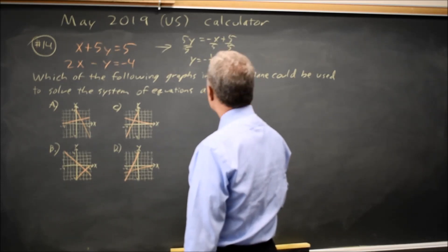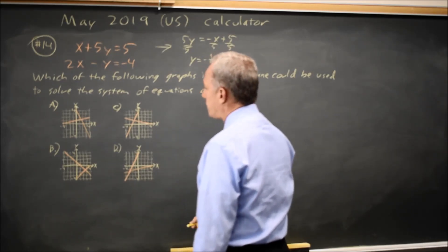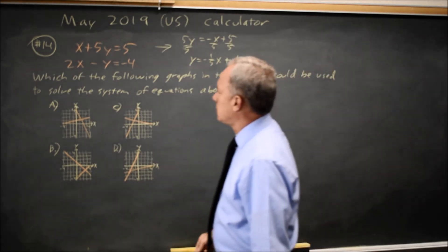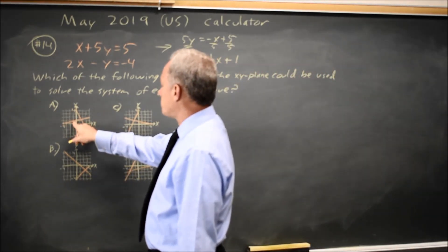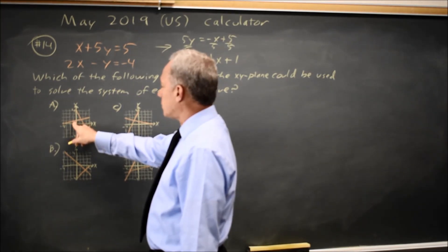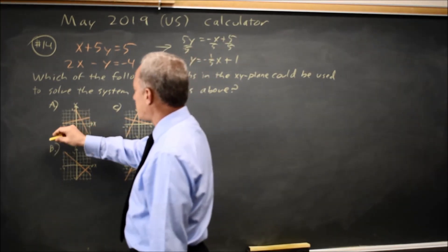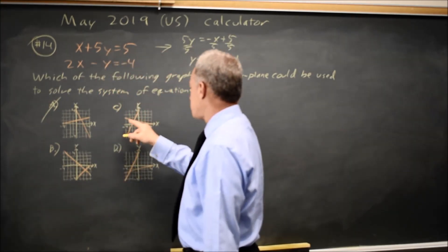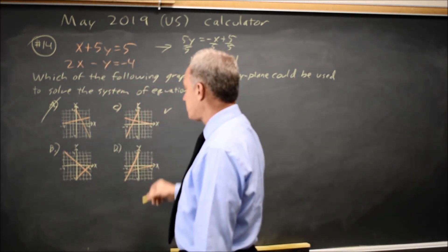So we have a shallow negative slope and an intercept of 1. This is a shallow positive slope and an intercept of 1 or a steep negative slope with a higher intercept. So it's not A. This one has a shallow negative slope with an intercept of 1, so it could be correct.